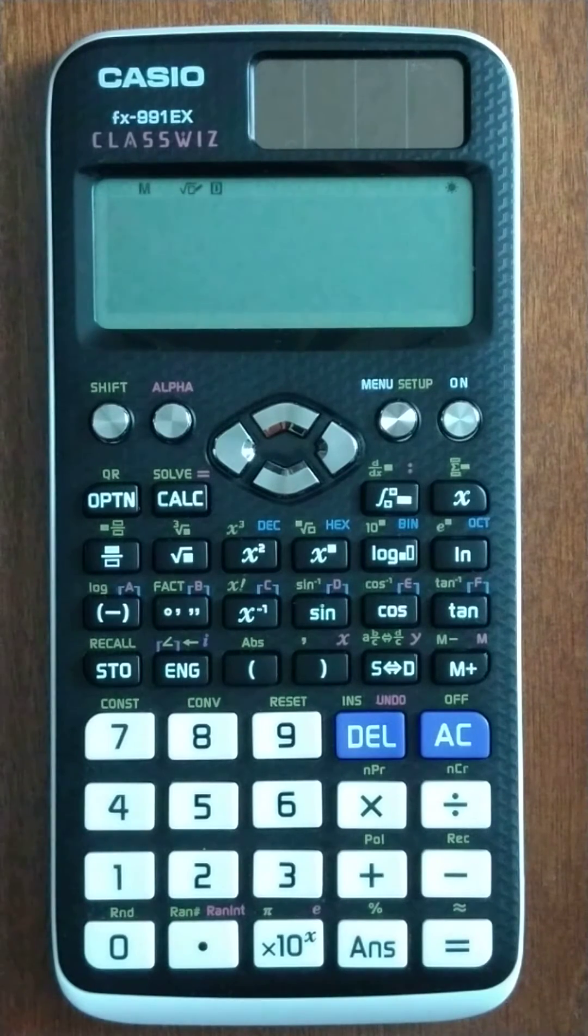All right, for this example we are going to look at the square root of negative 72. So we're doing some complex numbers here, and we want to simplify it.